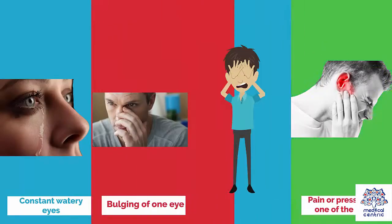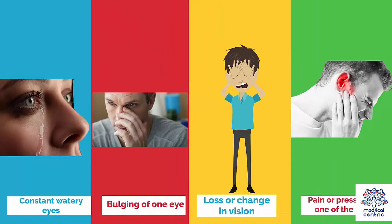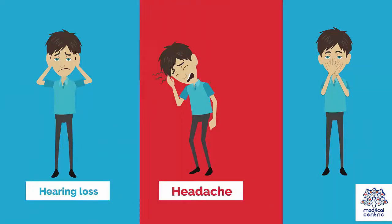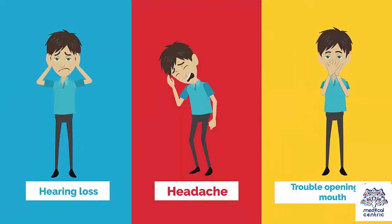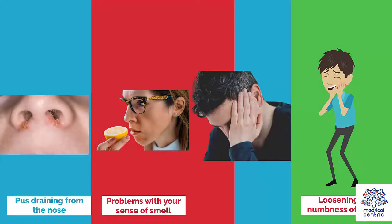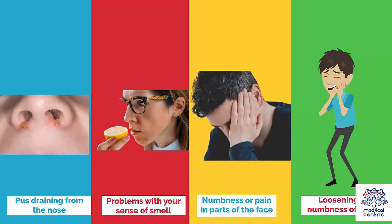Additional symptoms include: constant watery eyes, bulging of one eye, loss or change in vision, pain or pressure in one of the ears, hearing loss, headache, trouble opening the mouth, enlarging lymph nodes in the neck seen or felt as lumps under the skin, pus draining from the nose, problems with your sense of smell, numbness or pain in parts of the face, and loosening or numbness of teeth.